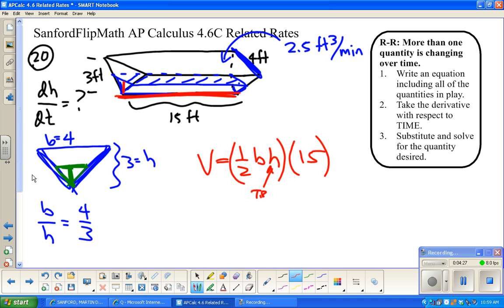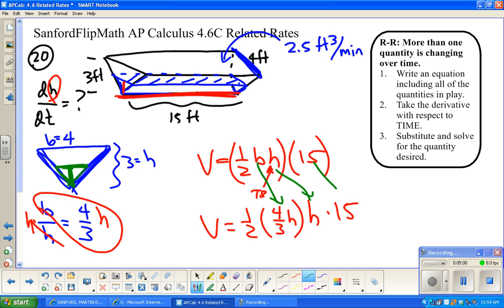So I'm going to use that to work my equation down to a single variable on the right side, so a single independent variable. So I want H to be in it. So I don't want B to be in it, so I want to replace the B. So I'm going to multiply both sides by H. So I have B equals four-thirds times H. So this is now going to be volume equals one-half, instead of B, I'm going to write four-thirds H, times H, times 15.